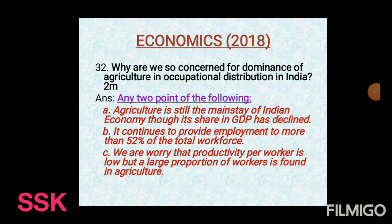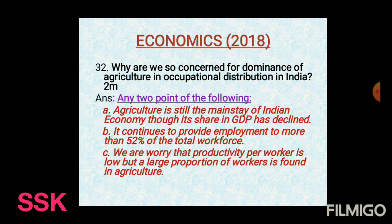Moving on to question number 32: Why are we so concerned about the dominance of agriculture and occupational distribution in India? This is a 2-mark question. Point A: Agriculture is still the mainstream of the Indian economy, even though its share in GDP has declined. Point B: It continues to provide employment to more than 52% of the total workforce.